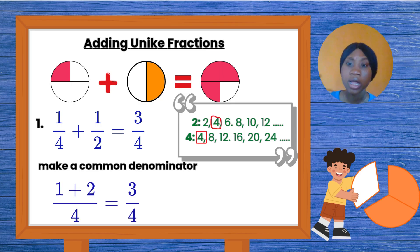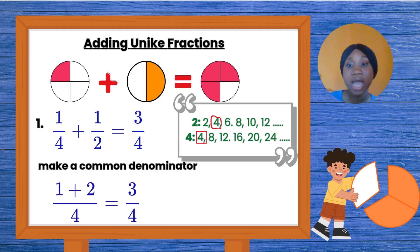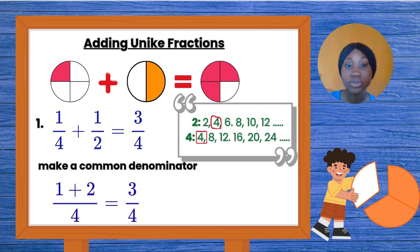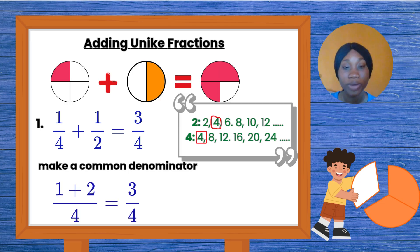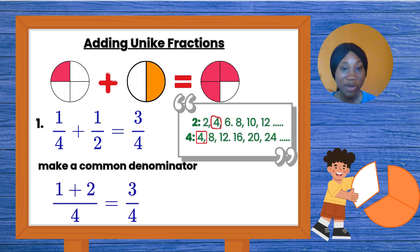Now move back to your fraction. Starting with one over four: how many times will four go into my denominator four? Four goes into four one time. One times the one on top of that four gives me one, so my one over four still remains one over four. Now moving to the second fraction: how many times will two go into my common denominator four? That is two times. Two times the one on top of that two gives me two. So my one over two has changed to two over four. Both fractions now have the same number at the bottom. Now, just like like fractions, one plus two gives me three, and my final answer is three over four.